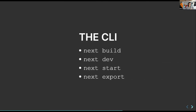The CLI is similarly simple: Next.build builds your site altogether, Next.dev runs a development server, Next.start runs a production server, and Next.export exports your entire Next.js application as a static site. Typically you'll run Next.dev to work on things yourself, but your host — whether Netlify, AWS Amplify, Vercel, or others — will be the one running Next.build, start, and export.